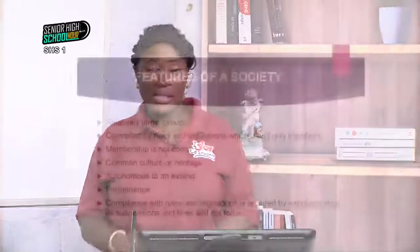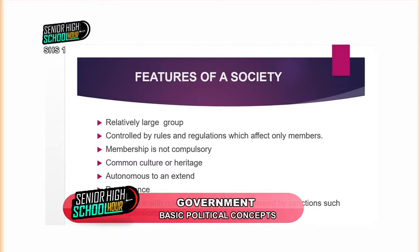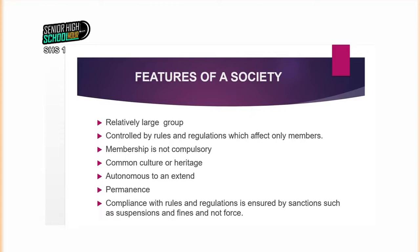Another feature of a society is that membership is not compulsory. You can choose to be a member, you can choose not to be — nothing binds you to this particular arrangement based on the particular objective of the group. A society also has a common culture or heritage. When we say culture, we are talking about the lifestyle of a group of people at a particular time. A common culture means this group of people act the same way, live the same way, and have a common heritage. A society is also autonomous to an extent.